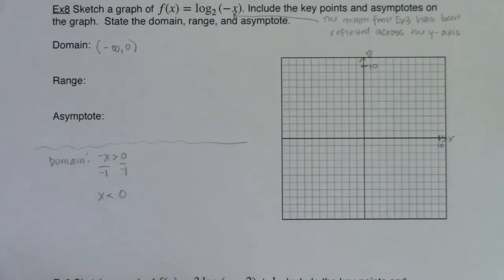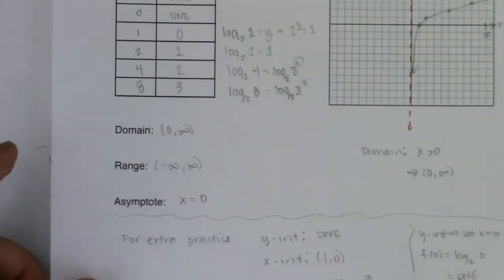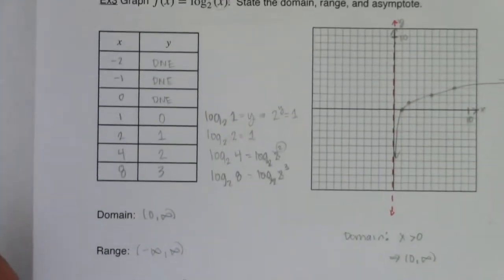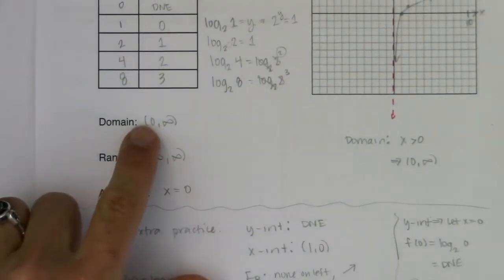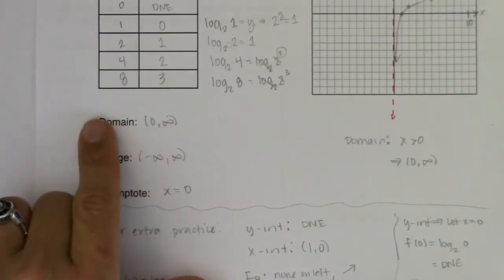All right. And that is the opposite or really the reflection of what we had in example three, right? Zero. Well, negative zero is zero, but negative infinity goes to negative infinity.